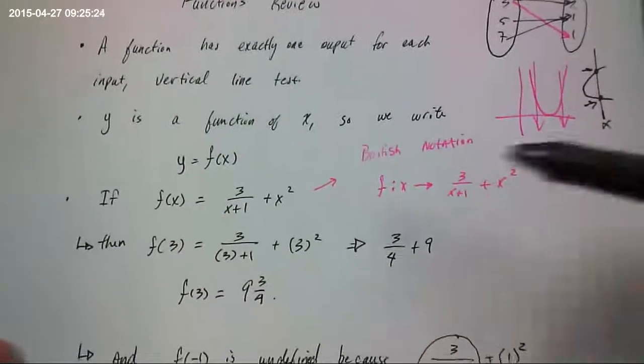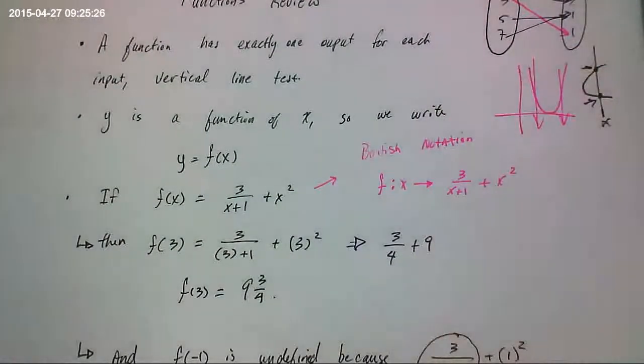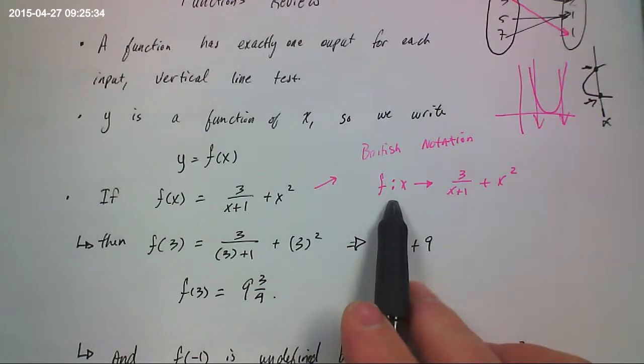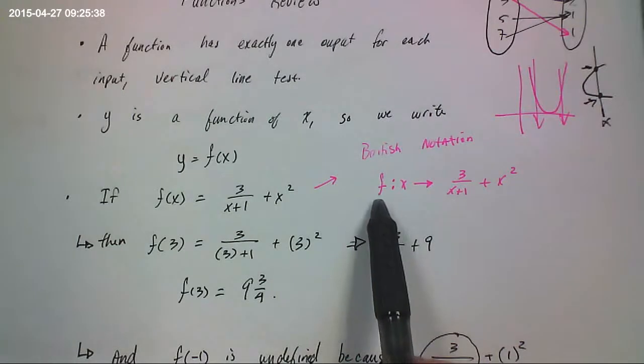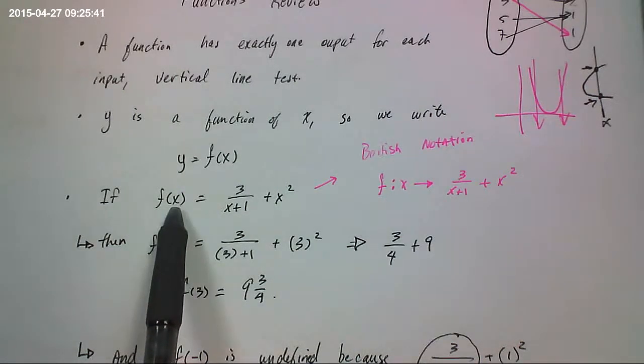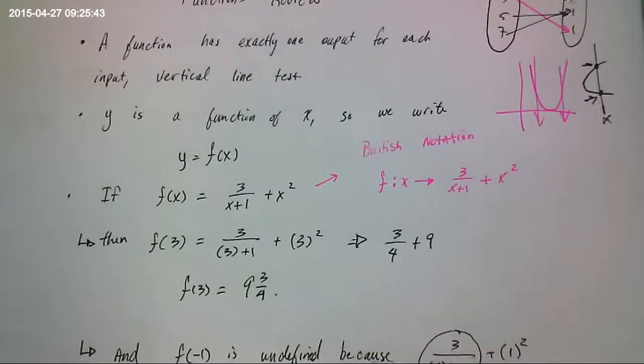Suppose that we have this function. It says 3 divided by x plus 1 plus x squared. The British notation sometimes looks like this. Sometimes they write it just like this. This means the same thing as this. Don't let that confuse you.